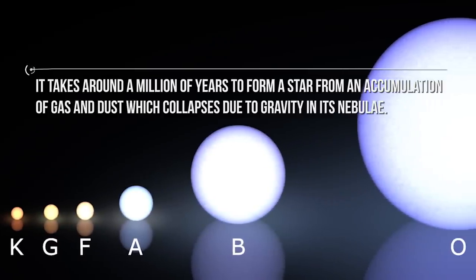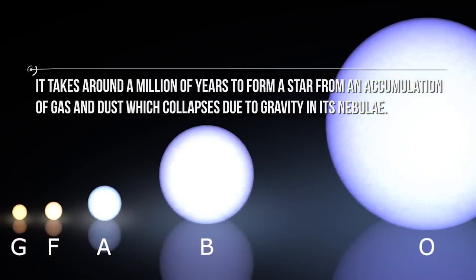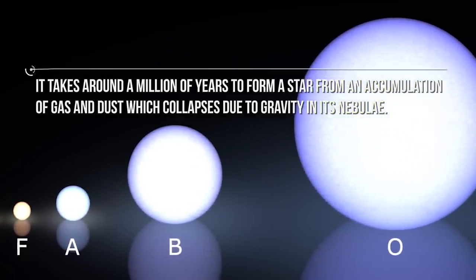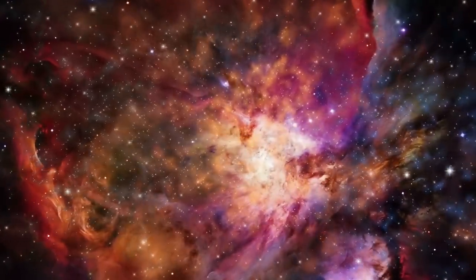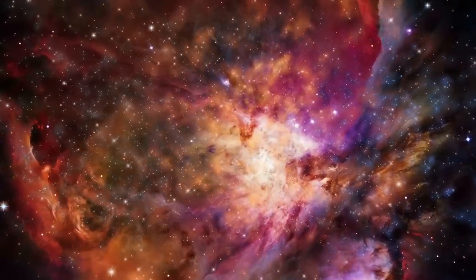The formation of a star is not a quick process. It takes around a million years to form a star from an accumulation of gas and dust which collapses due to gravity and its nebula. Our universe has nebulas, in which new stars are being formed all the time. Though we haven't observed much of these stars present in our infinite universe, those which are observed give a good idea of their composition and properties.